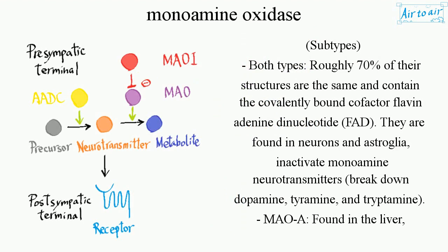Subtypes: Both types share roughly 70% of their structures and contain the covalently bound cofactor Flavin Adenine Dinucleotide (FAD). They are found in neurons and astroglia, and inactivate monoamine neurotransmitters, breaking down dopamine, tyramine, and tryptamine.